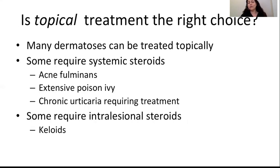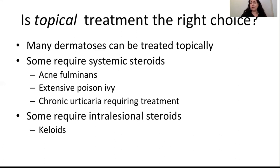Once you've decided a corticosteroid is the right treatment, is a topical corticosteroid the right choice? Many dermatoses can be treated topically, but not all. For example, acne fulminans usually needs oral steroids. Extensive poison ivy usually needs systemic steroids, and low-dose prednisone for chronic urticaria would typically be systemic therapy. Some lesions such as keloids don't respond to topical corticosteroids but respond very well to intralesional corticosteroids.